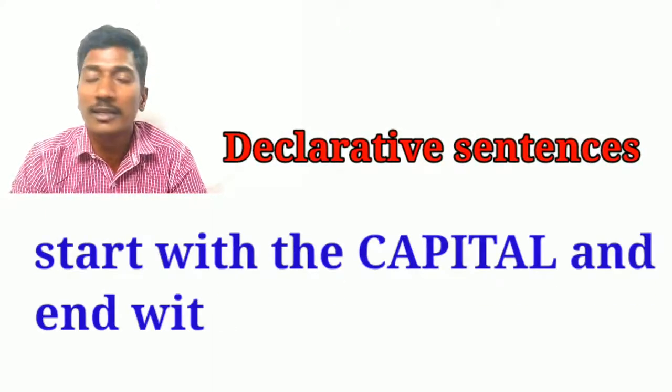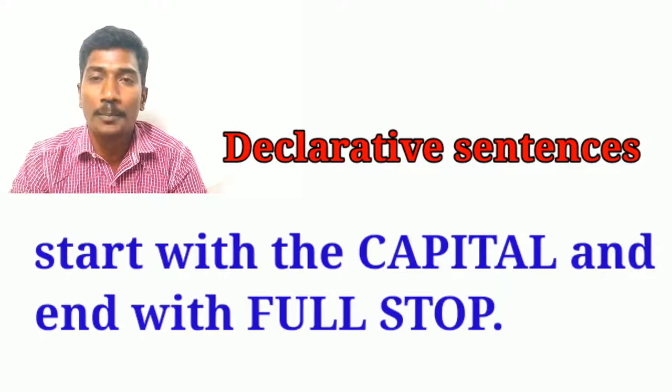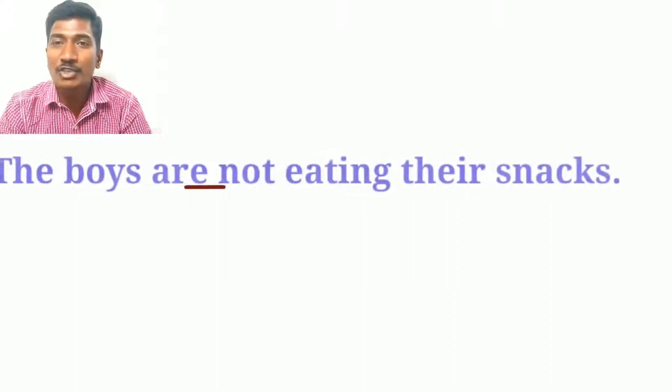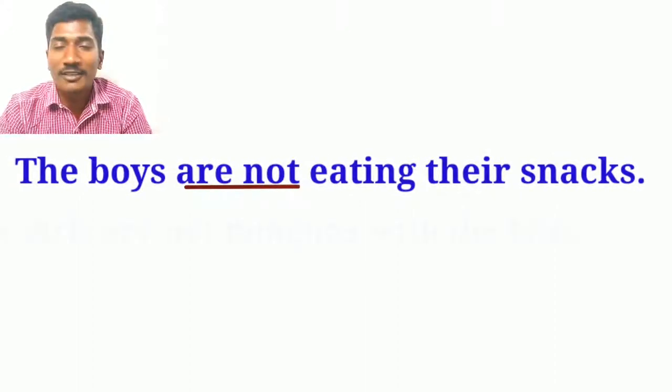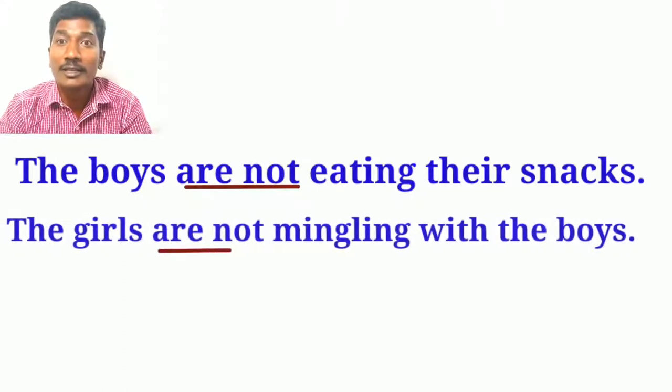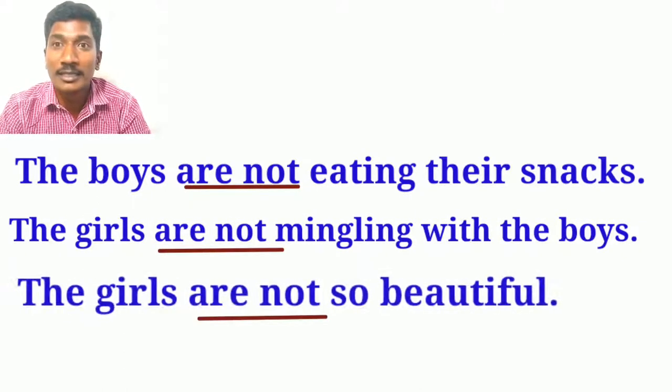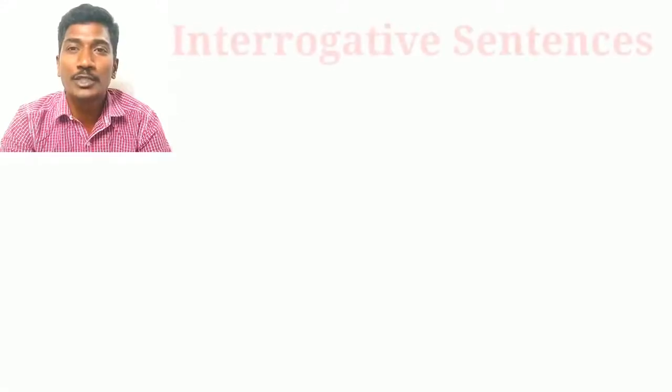Declarative sentences start with a capital letter and end with a full stop. Declarative sentences can also be negative. For example: The boys are not eating their snacks. The girls are not mingling with the boys. The girls are so beautiful — or negative: the girls are not so beautiful. I am playing here — negative: I am not playing here. They are all declarative sentences. Let's move on to interrogative sentences.